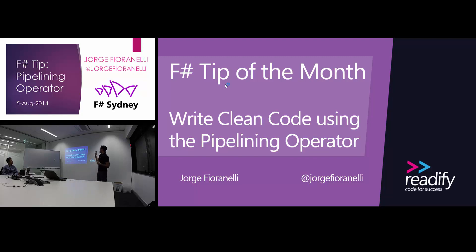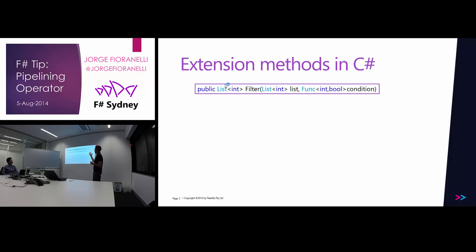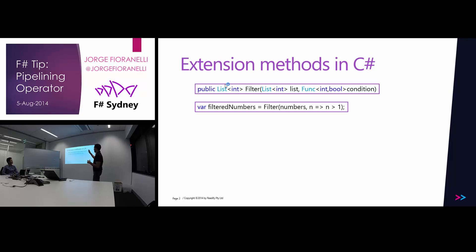Today's topic is about using the pipelining operator to write clean code in F#. To really understand how the pipelining operator works, it's worth understanding or reviewing what extension methods are. If we have a function like the one you see there — a method in C# — that filters a list, you can see that we have a first argument that is the list and the second argument that is the condition.